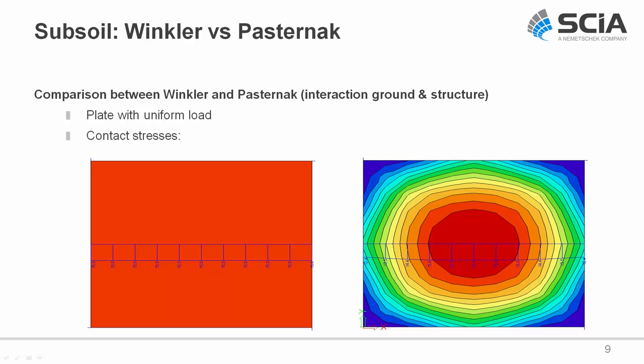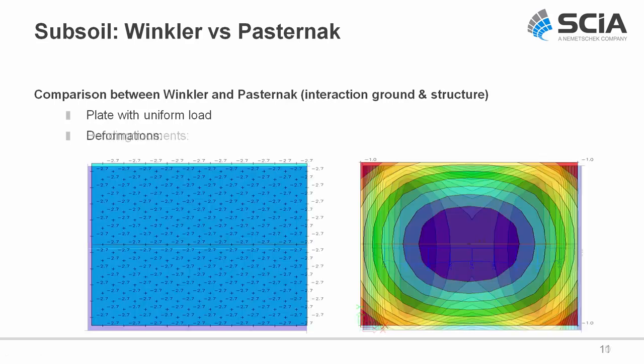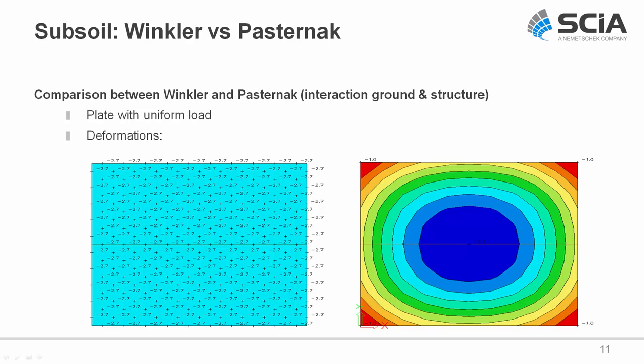For a uniform load on a plate, the Winkler model gives uniform stresses in the ground. But with the Pasternak model, there is higher stress in the middle and lower stress on the outer edges. The same applies to bending moments — you will see bending moments using the Pasternak model but not with the Winkler model. For deformation, the Pasternak model shows more deformation in the center of the plate than on the edges.